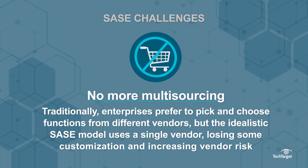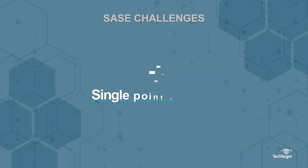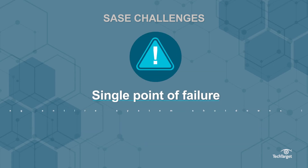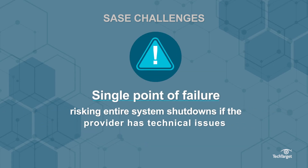Traditionally, enterprises prefer to pick and choose functions from different vendors. But the idealistic SASE model uses a single vendor, losing some customizations and increasing vendor risk. Additionally, a single point of failure risks entire system shutdowns if the provider has a technical issue.